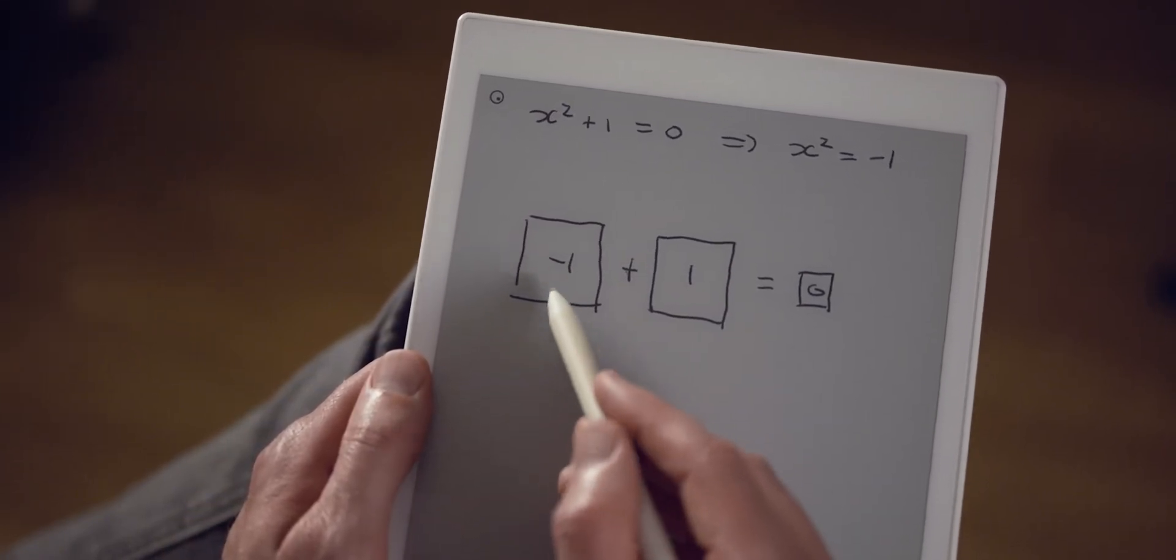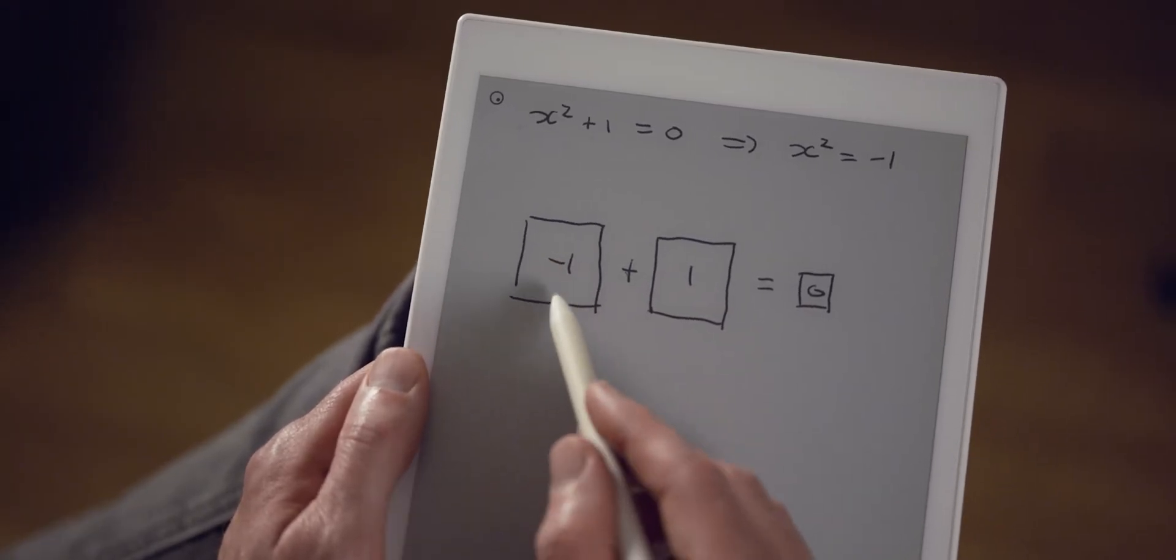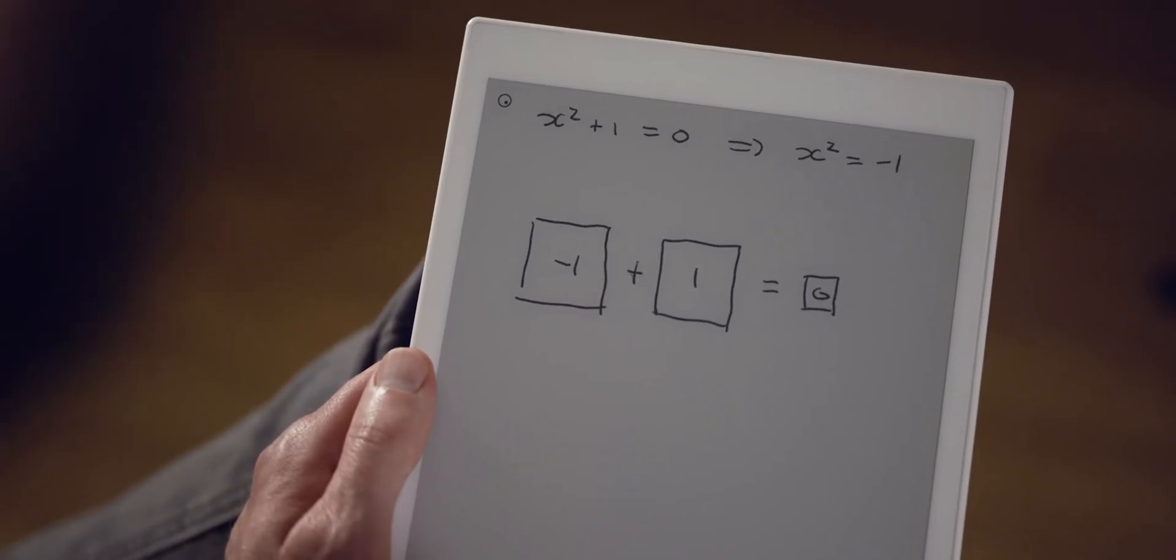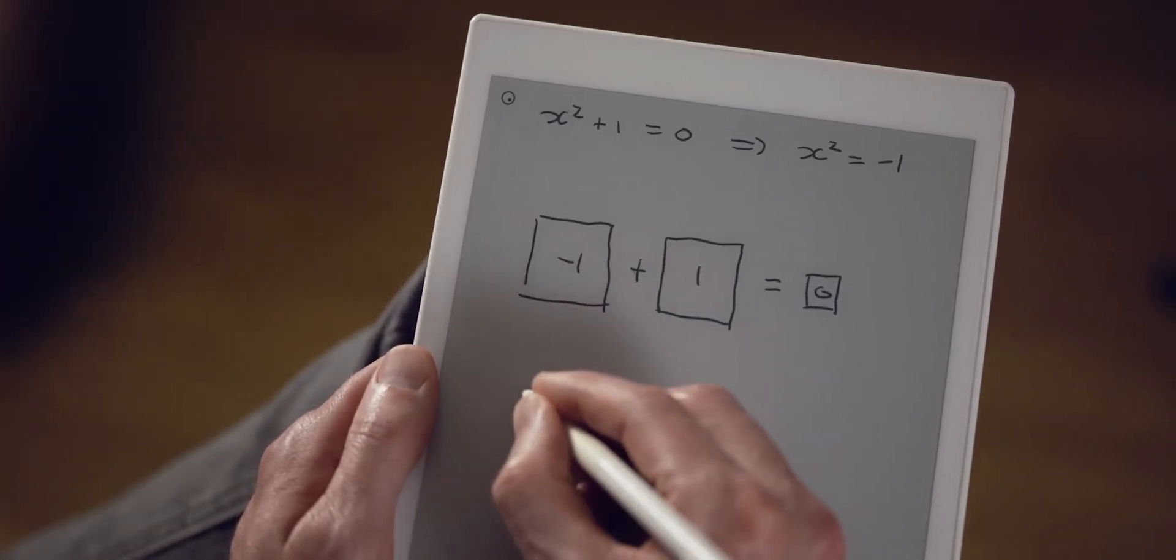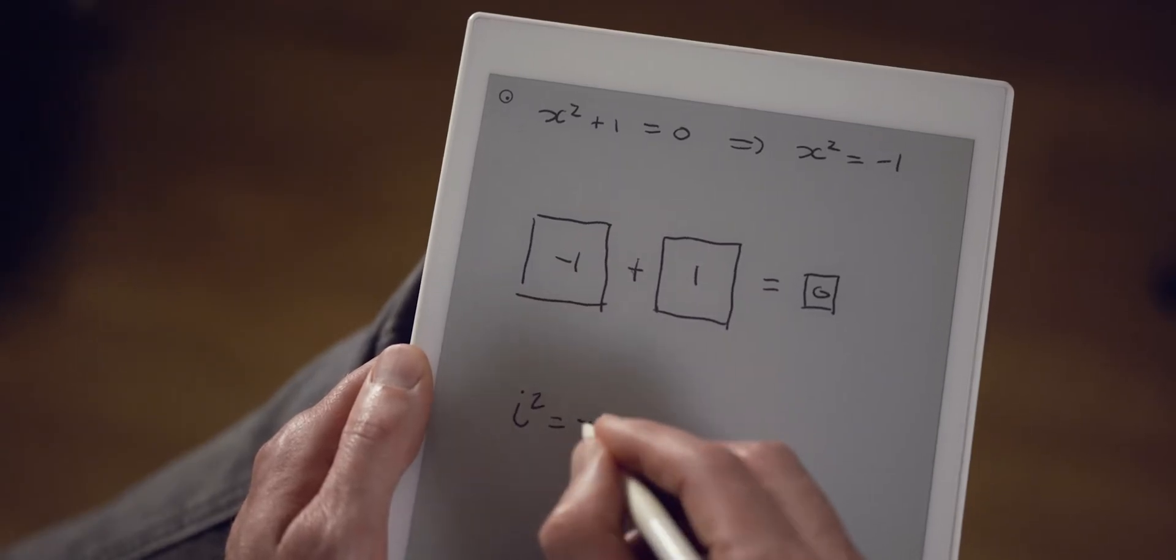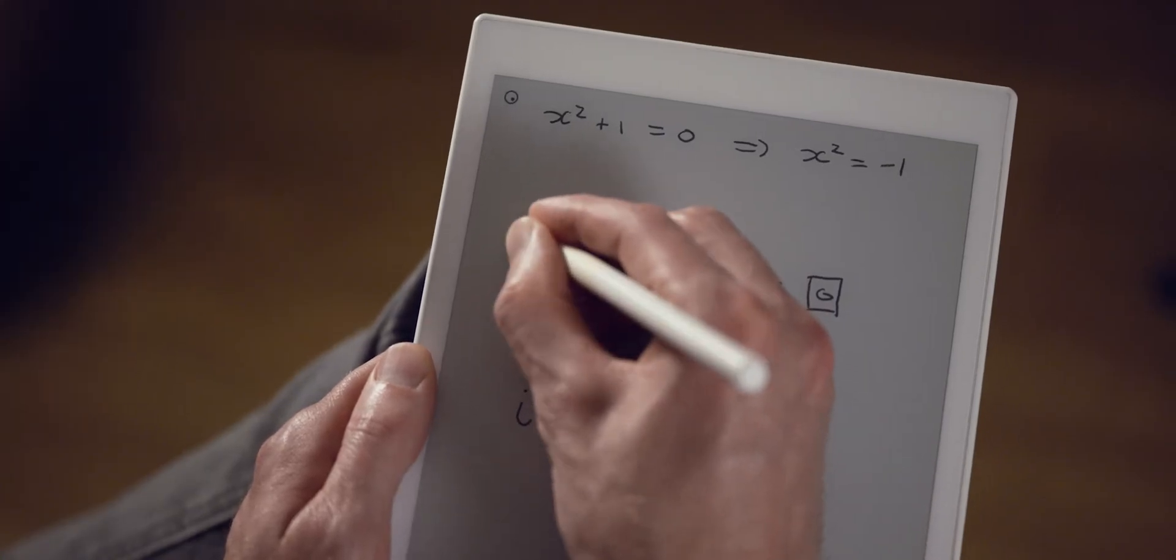The question now is this minus one here: what should the sides of this square be such that the area is negative one? Like I just said, there is no real number that will allow us to do that. But we could define a number i such that i squared is equal to minus one. Then I can say that the sides of this square are i.